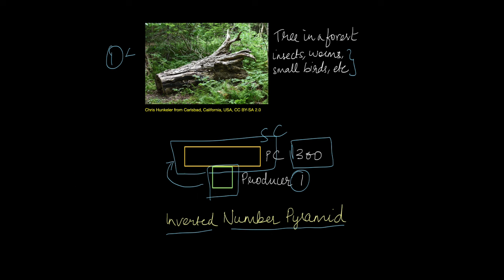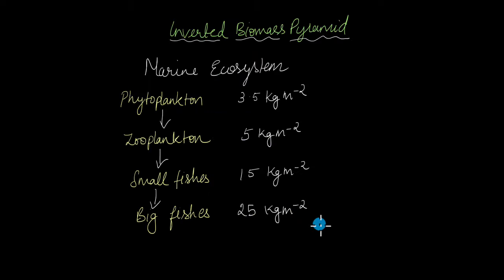Now what about inverted biomass pyramids? Inverted biomass pyramids are often seen in marine ecosystems where the phytoplankton are the producers, the primary producers. They are consumed by zooplankton, which makes them the primary consumers. Zooplankton is consumed by small fishes, making them secondary consumers, and these small fishes are consumed by big fishes, which makes them the tertiary consumers.